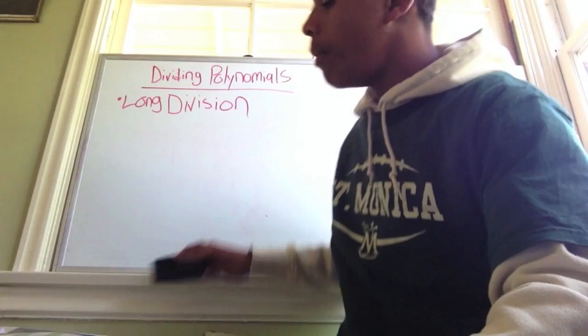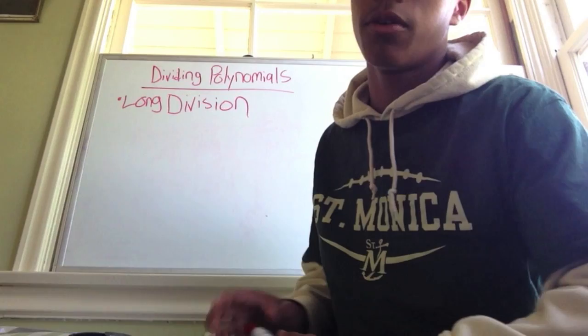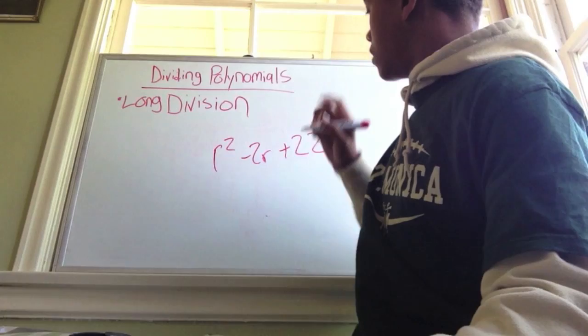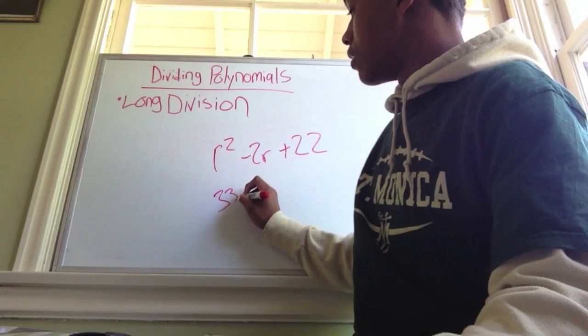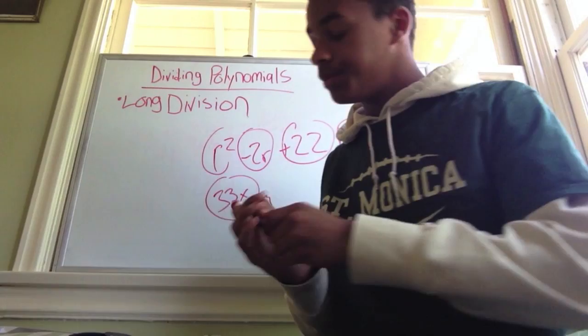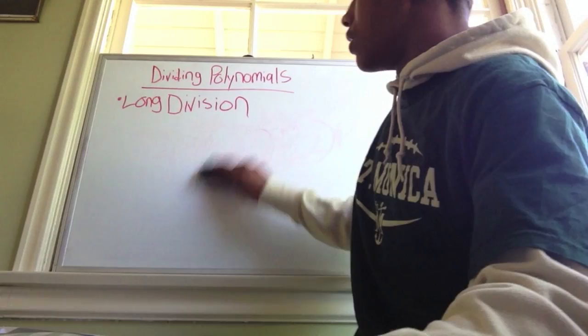And a polynomial — that is an algebraic expression consisting of one or several terms. So like r squared minus 2r plus 22, that's a polynomial because it has more than one term rather than just one term. So you see: 1, 2, 3 terms — this is a polynomial. That's the simple vocabulary.